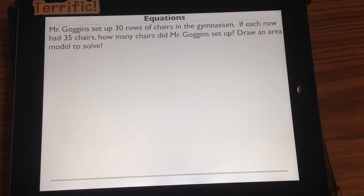This first question. Mr. Groggins set up 30 rows of chairs in the gymnasium, which is a gym by the way. If each row had 35 chairs, how many chairs did Mr. Groggins set up? Draw an area model to solve.